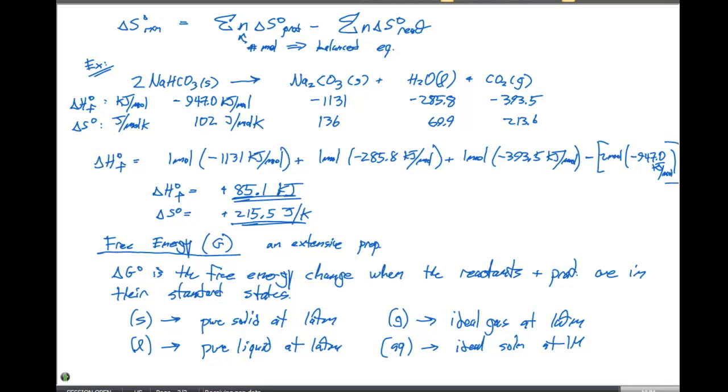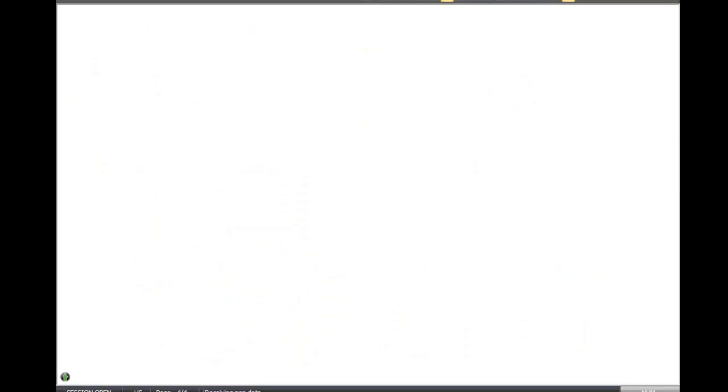So Gibbs came up with some relationships. And the relationship that he came up with was that the free energy, or G, is gonna be equal to H minus T times S.